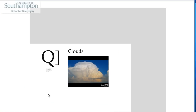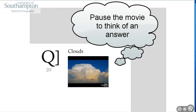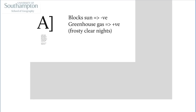The question is: do clouds have a positive or negative feedback effect on the Earth's climate? The answer is both at the same time. Clouds tend to block the sun, which gives us negative feedback. But they also tend to warm the Earth — water vapour is a greenhouse gas — so it gives you positive feedback. And that's the effect that makes clear nights tend to be frosty in winter.